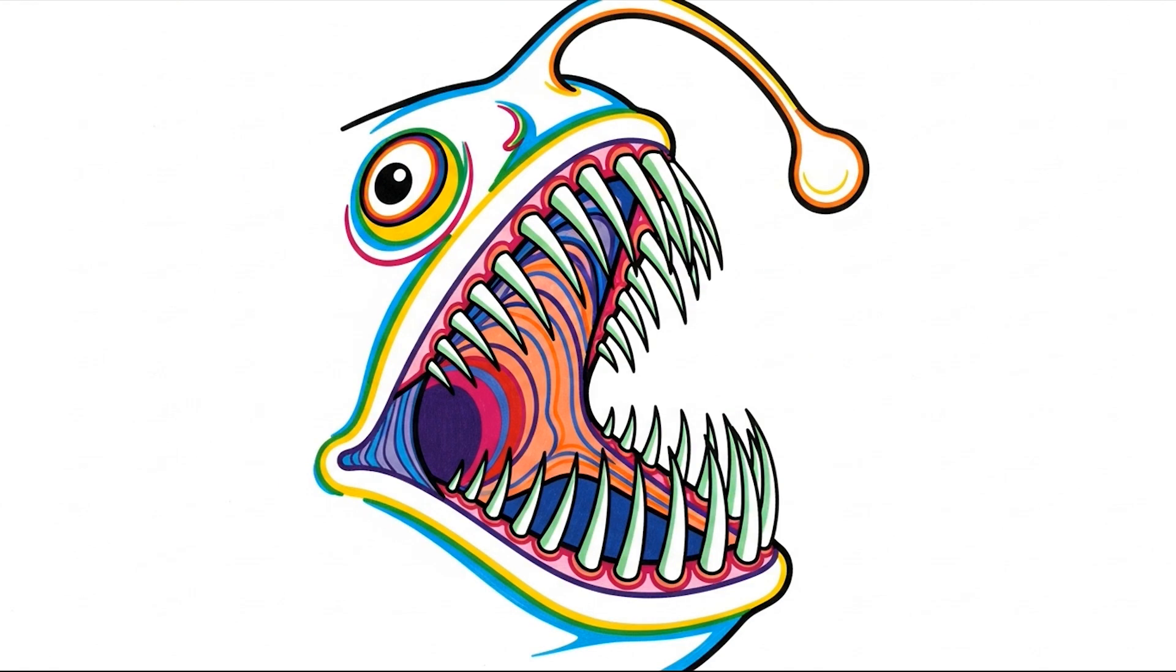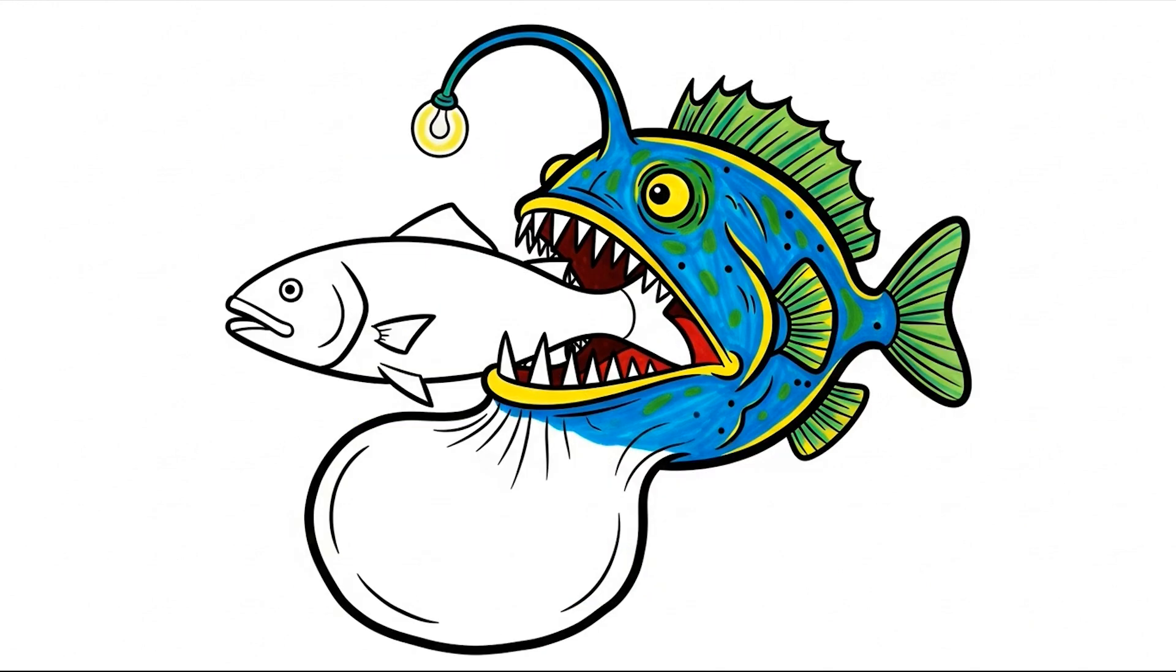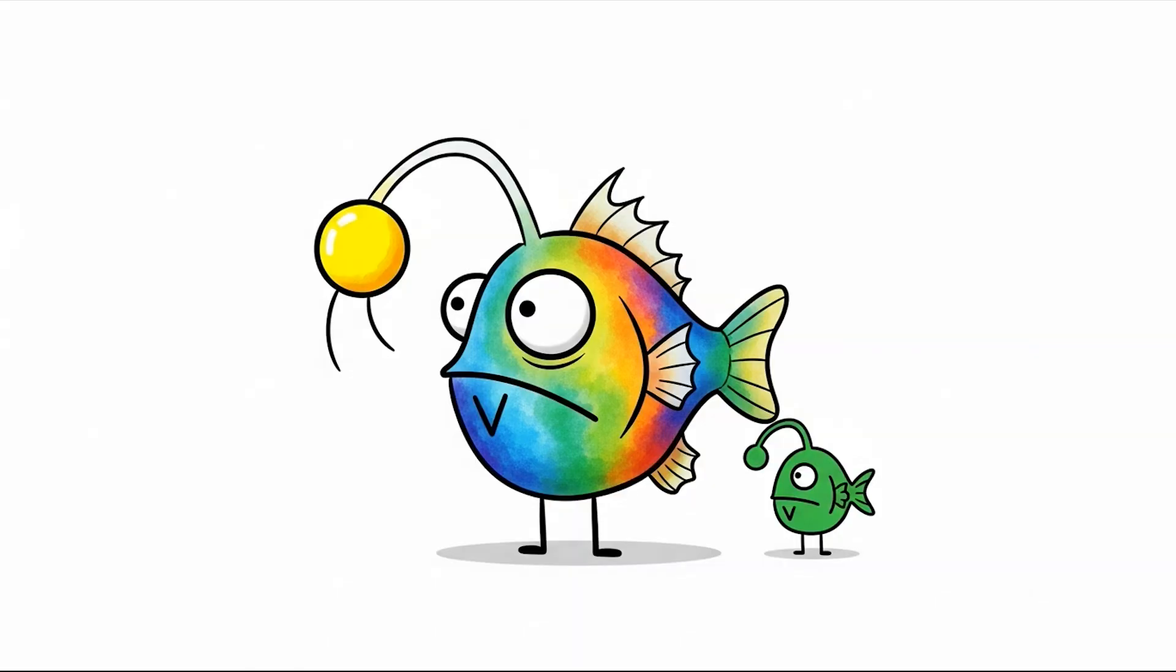Her teeth are incredibly long and sharp, curving inward like fishhooks, ensuring nothing escapes once it's caught. Her jaw is a one-way street to digestion, and her stomach can stretch to swallow prey twice her size.